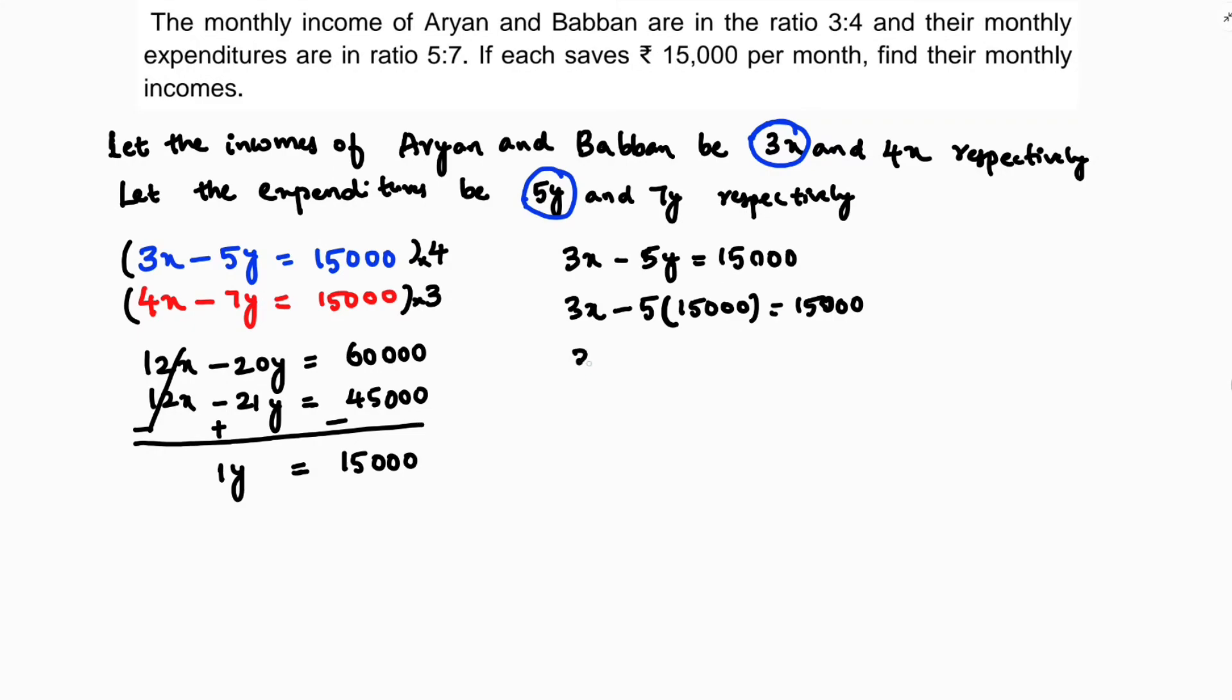So 3x minus 5 times 15,000 which is 75,000 equals 15,000. So 3x equals 15,000 plus 75,000, which is 90,000. X equals 90,000 upon 3, so x is 30,000.